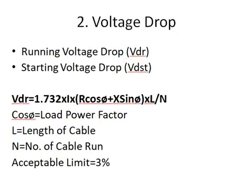The running voltage drop is calculated by this formula: VDr equals root 3, into continuous current rating, into (R·cosφ + X·sinφ), into cable length, divided by number of runs. Here cosφ is the load power factor. This value should be limited to three percent.